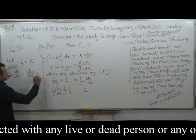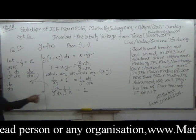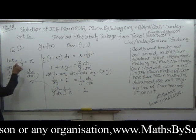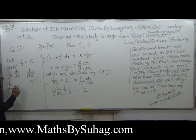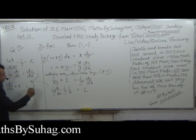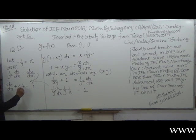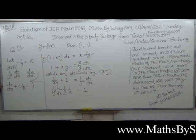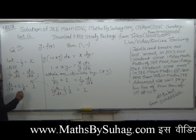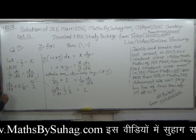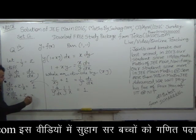इसमें ऐसा put कर दीजिए, तो dz/dx बीच में हो गया plus, क्योंकि मैंने 1/y minus वाले को z माना था, is equal to 1. 1/x यहां पर हटाने के लिए x से multiply किया, dz/dx + z is equal to x.